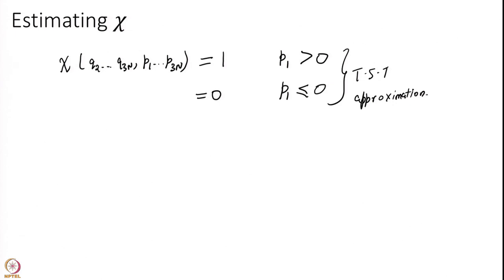This is the transition state theory approximation — one of the central approximations made in transition state theory. If p1 is positive (p1 being the momentum along the reaction coordinate), then I am reactive; I must have come from reactant in the past and will end up in the product in the future, independent of whatever q2, q3...q3N or p2, p3...p3N are. I only look at p1: if p1 is positive, you are traveling forward and will end up in the product. If p1 is less than 0, you are coming in the opposite direction and are not allowed. That is the essence of transition state theory.